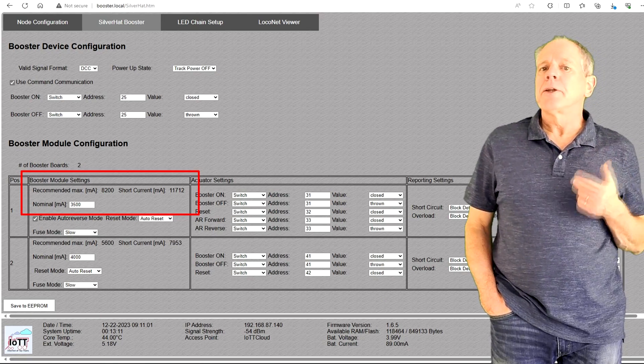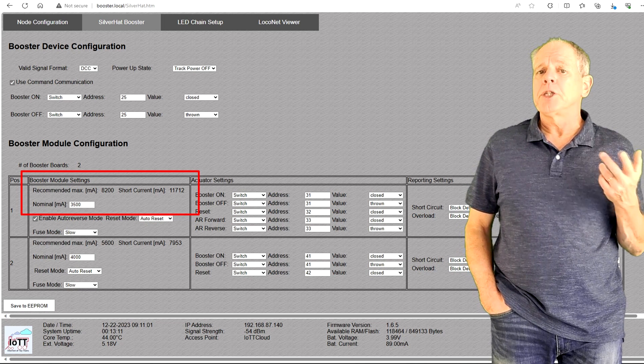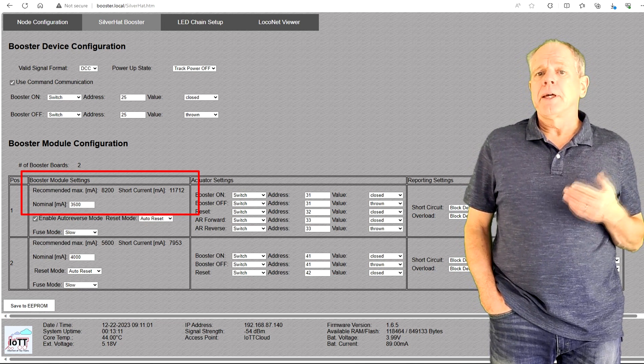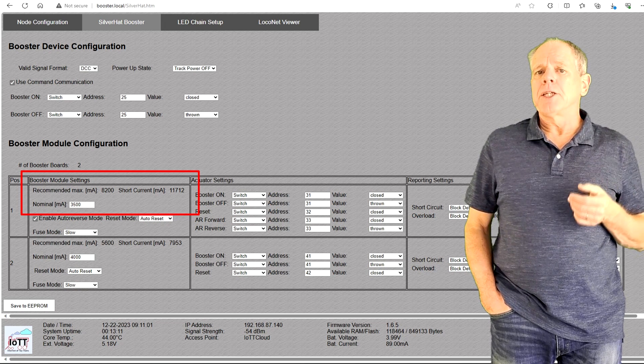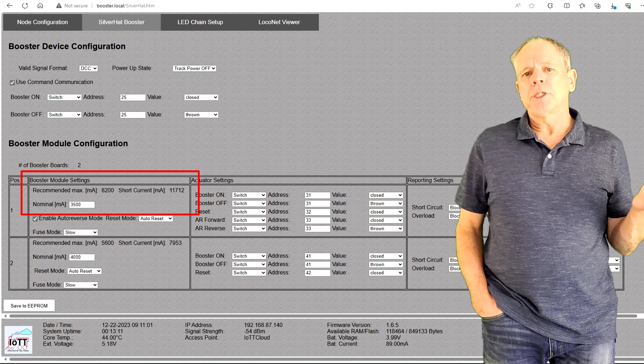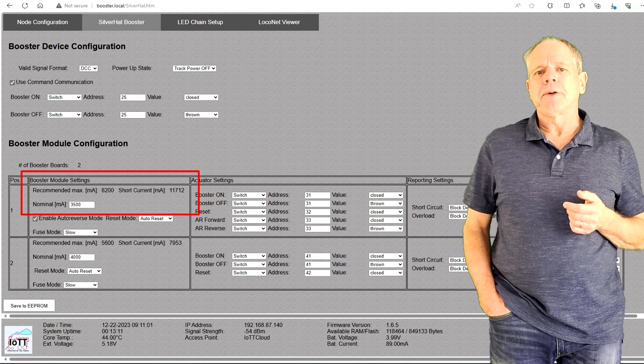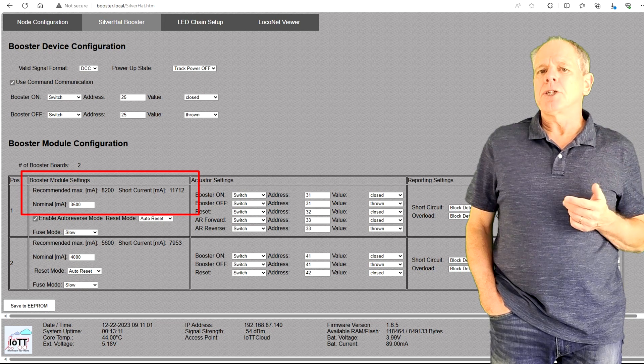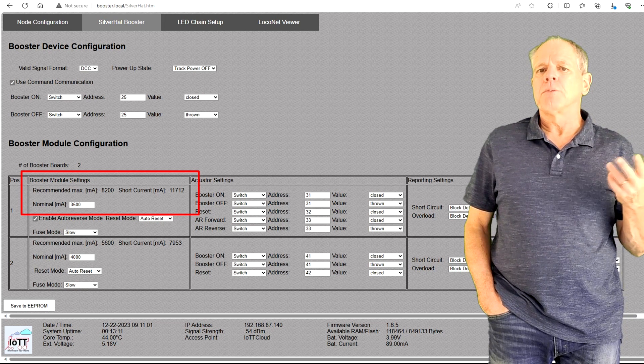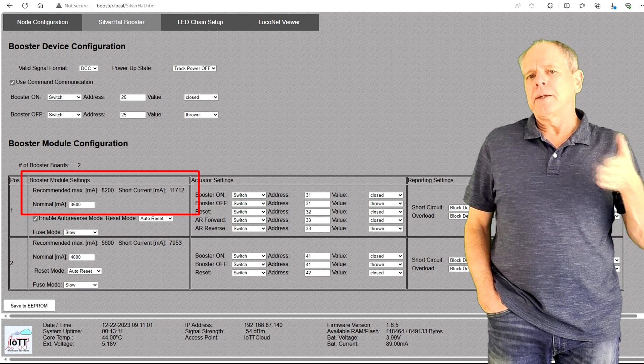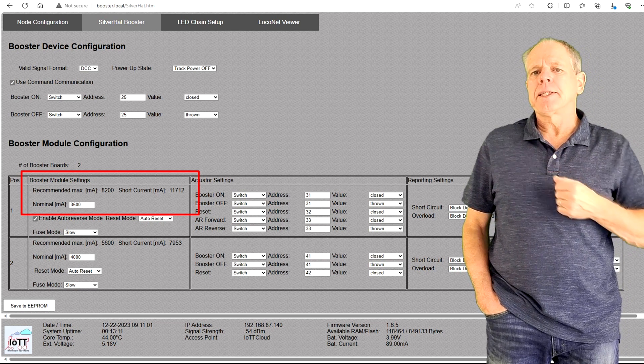Now we need to set the nominal output current for each booster board. Based on the measured short circuit current, the booster makes a recommendation for a safe maximum value. In the case of my first booster, the measured short circuit current is 11.7A and the recommendation for the nominal current is not more than 8.2A, so there is enough room between regular operation and short circuit detection.